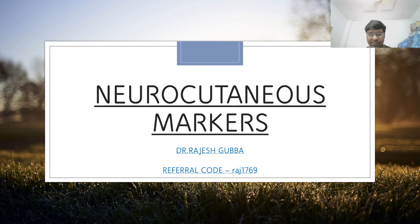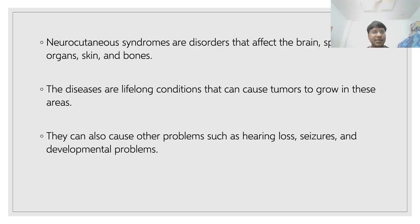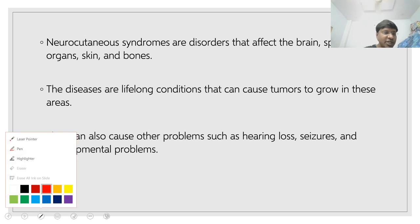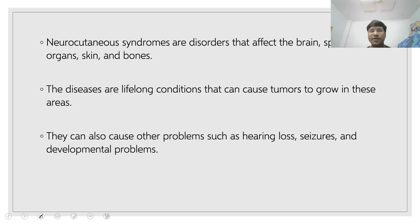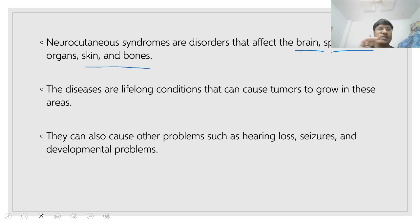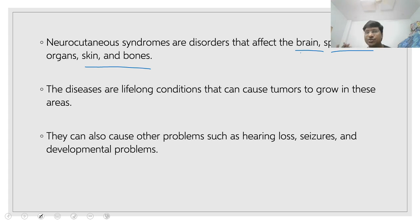Starting with this, first of all you should know what your neurocutaneous markers are. The neurocutaneous markers are present within the neurocutaneous syndromes. Now what are your neurocutaneous syndromes? They are basically the tumors — or the disorder of certain structures — like the disorder of the brain, the disorder of the spinal cord, the disorders of the skin, and as well as the bones. These are the neurocutaneous syndromes, and whenever the individual develops this particular disease, it will persist lifelong.